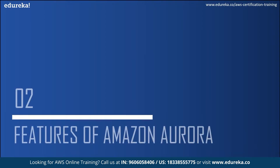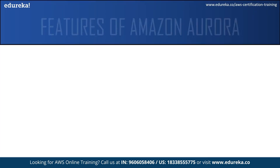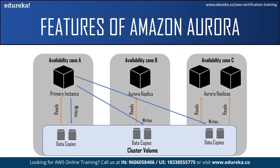An Amazon Aurora DB cluster consists of one or more DB instances and a cluster volume that manages the data for those DB instances. A DB instance is an isolated database environment running in the cloud, and a cluster volume is a virtual database storage volume that spans multiple availability zones, with each availability zone having a copy of the DB cluster data. The primary DB instance supports read and write operations and performs all data modifications to the cluster volume. Each Aurora DB cluster has one primary DB instance.